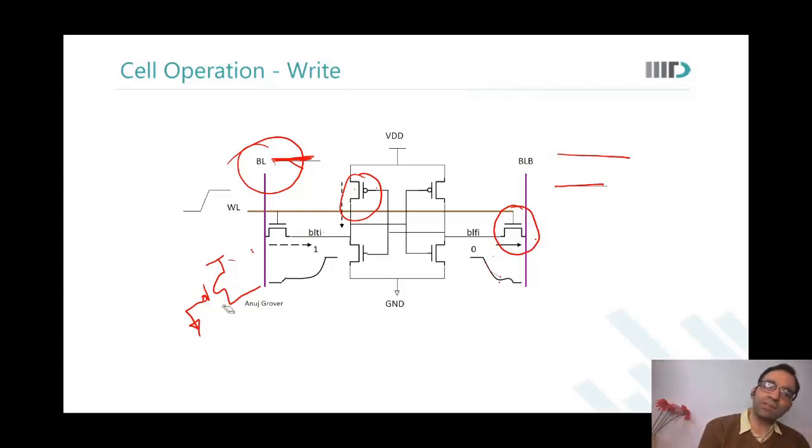What we saw in a 6T memory cell is that there is some ratioed design coming into picture. There is this PMOS that is sinking some current, there is this NMOS that is sinking some current and driving current. There is a ratio thing that comes because they removed those four PMOSes in the first step, because of which there are certain figures of merit linked to a memory cell.